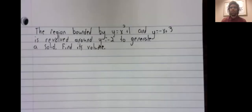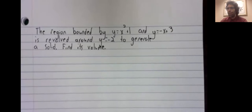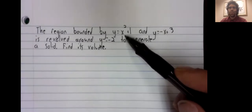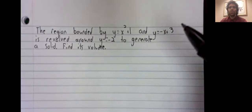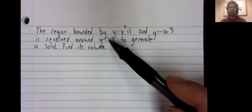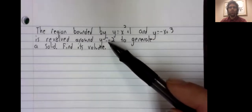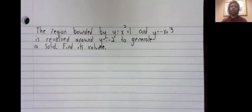Let's do an example with the washer method. In particular, this example. The region bounded by this quadratic and this line is revolved around this horizontal line to generate a solid, and we're asked for the volume of that solid.